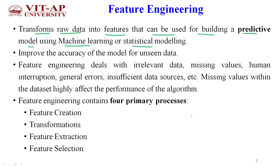For example, if we have data like serial number one in a web document, with a name like 'Charu' and a door number and a street name — this is just data given in a raw format.